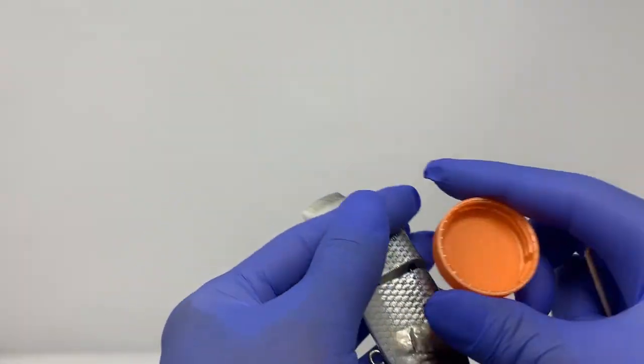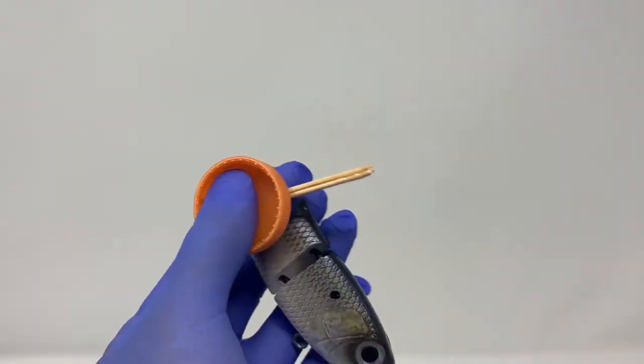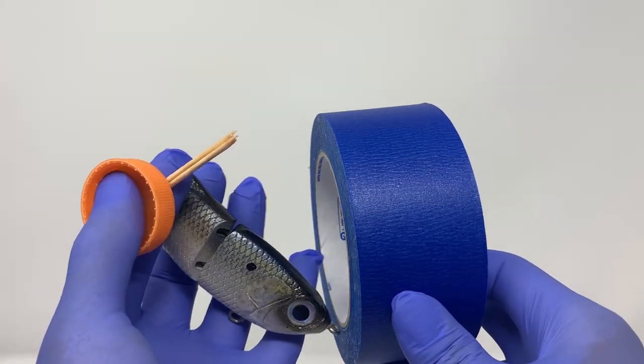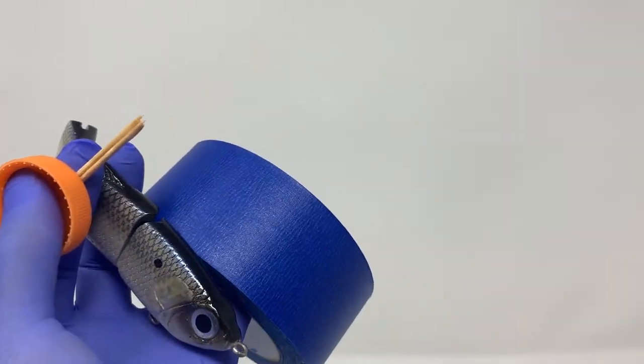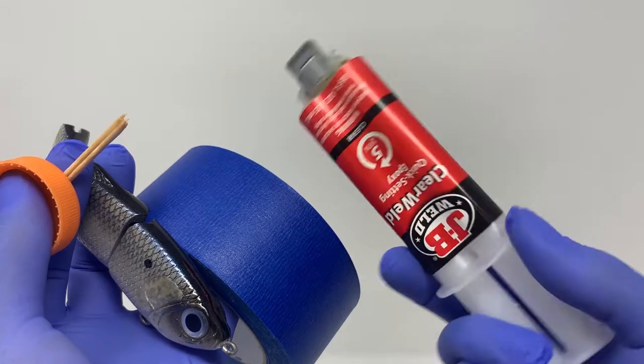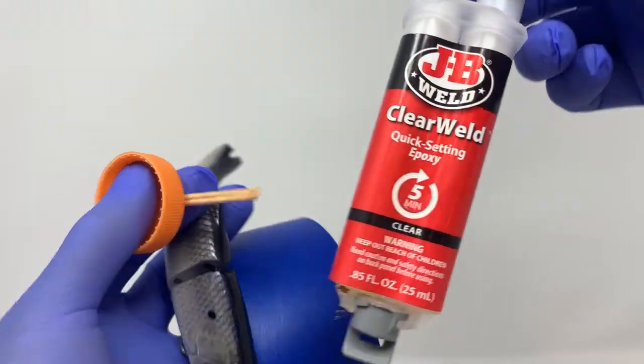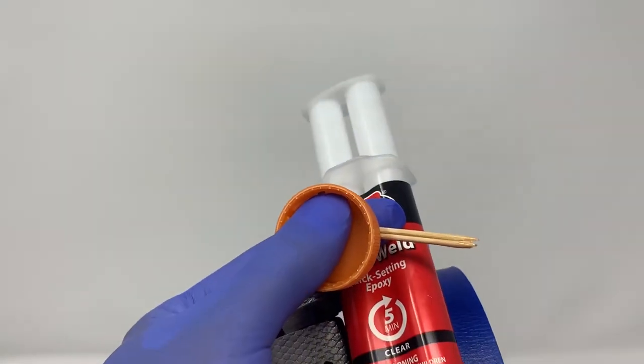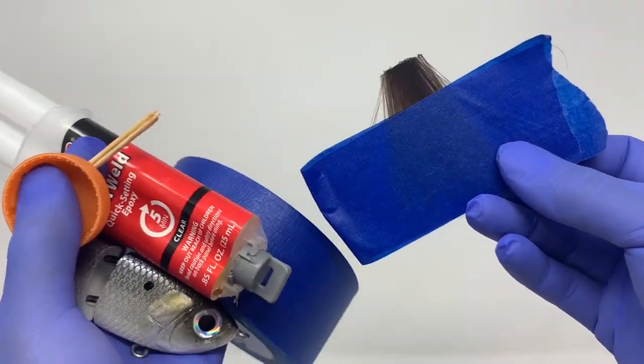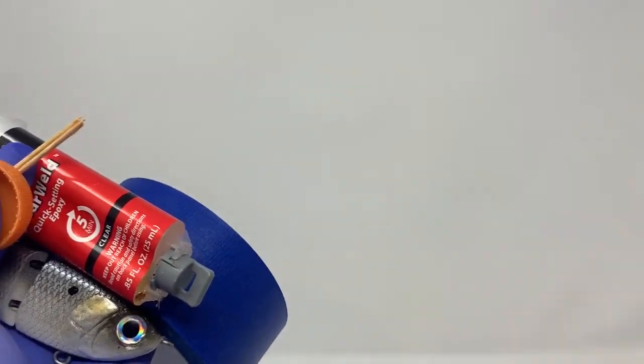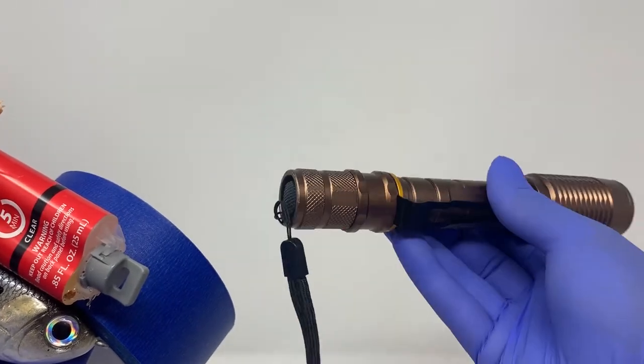What things you need are the Fatback, a bottle cap, some toothpicks, masking tape or painter's tape, some epoxy—this is JB Weld I get from Walmart, it's a five-minute clear weld—and the tail of course, and possibly a flashlight. I'll tell you why you need a flashlight.